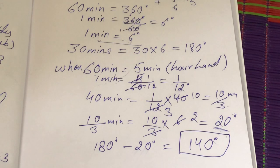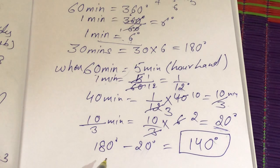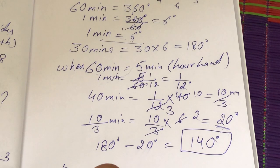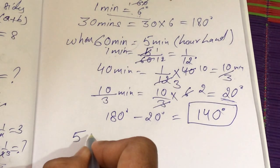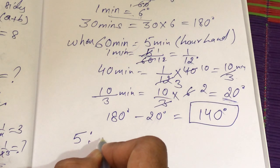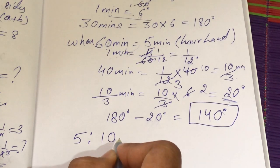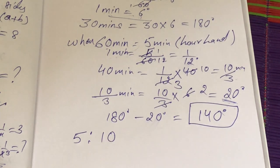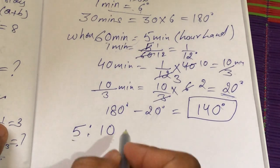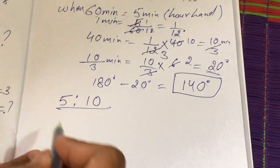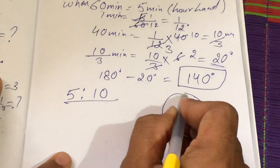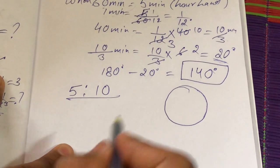Now I will do one more question using a shortcut method. The time is 5:10 — when the time is 5 hours and 10 minutes, we need to find the angle between the hour hand and the minute hand. Before solving, let's draw the clock. Drawing a clock is very important.